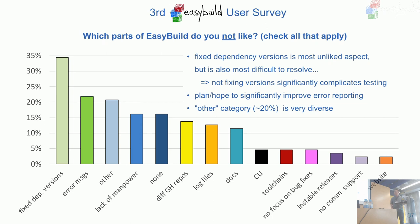I think we can do a better job of highlighting the probable cause of problems — finding the first error message in the log file and mentioning it in the output, maybe with red color highlighting. Similarly, if EasyBuild needs a source file and can't download it, it currently produces a very ugly error message. We should instead say 'I was trying to find this file, I looked there, couldn't find it, and maybe this is how you fix it — using this download URL.' There are lots of things to work on there.